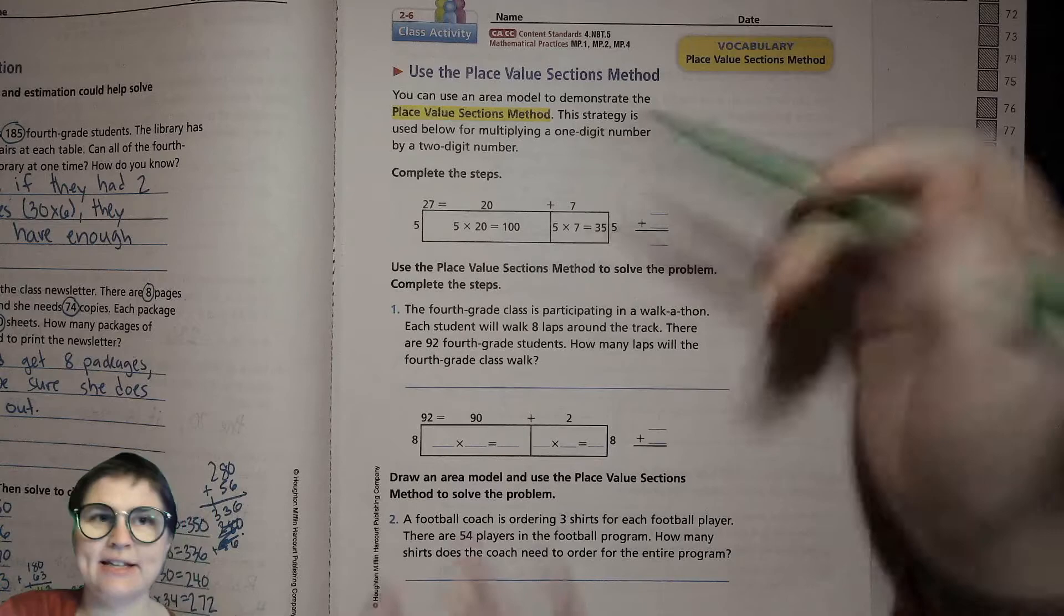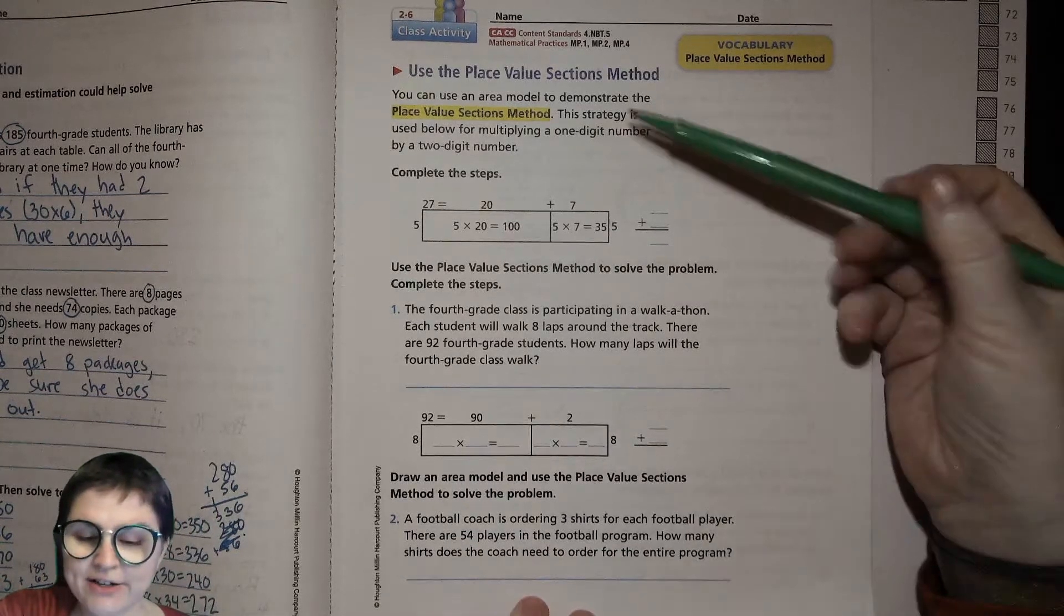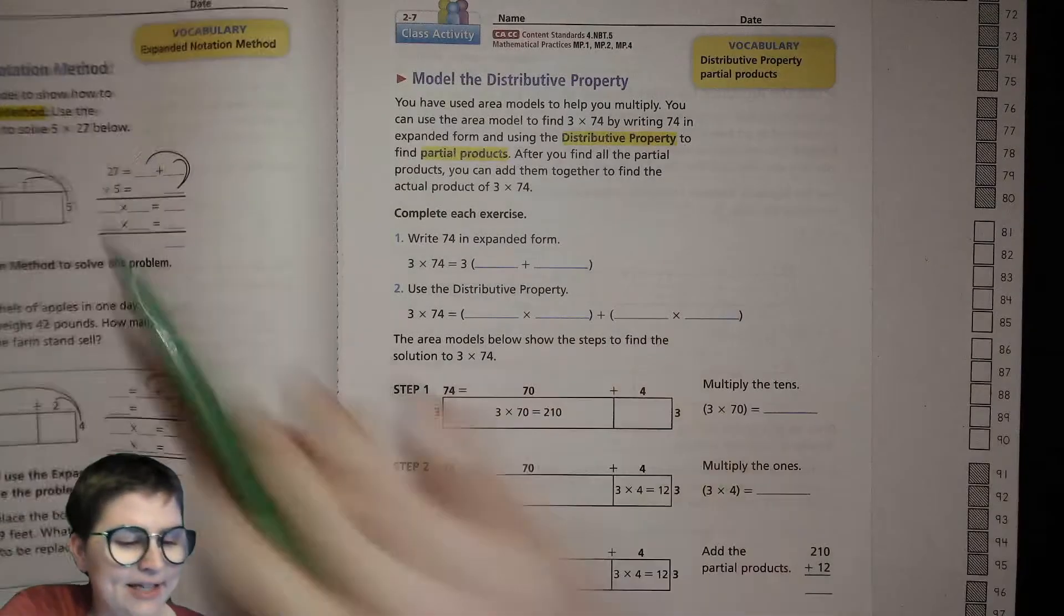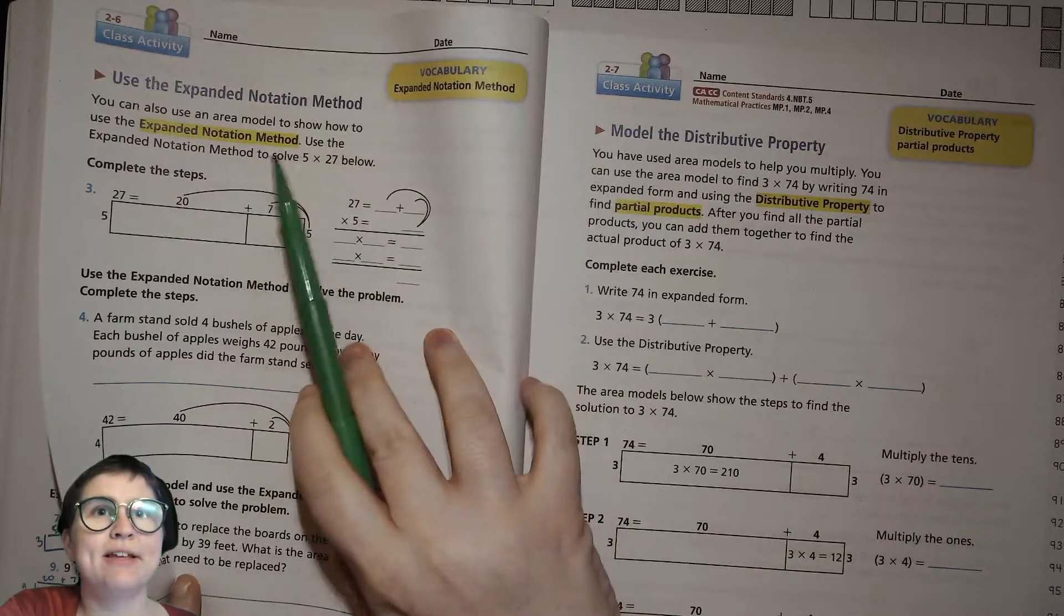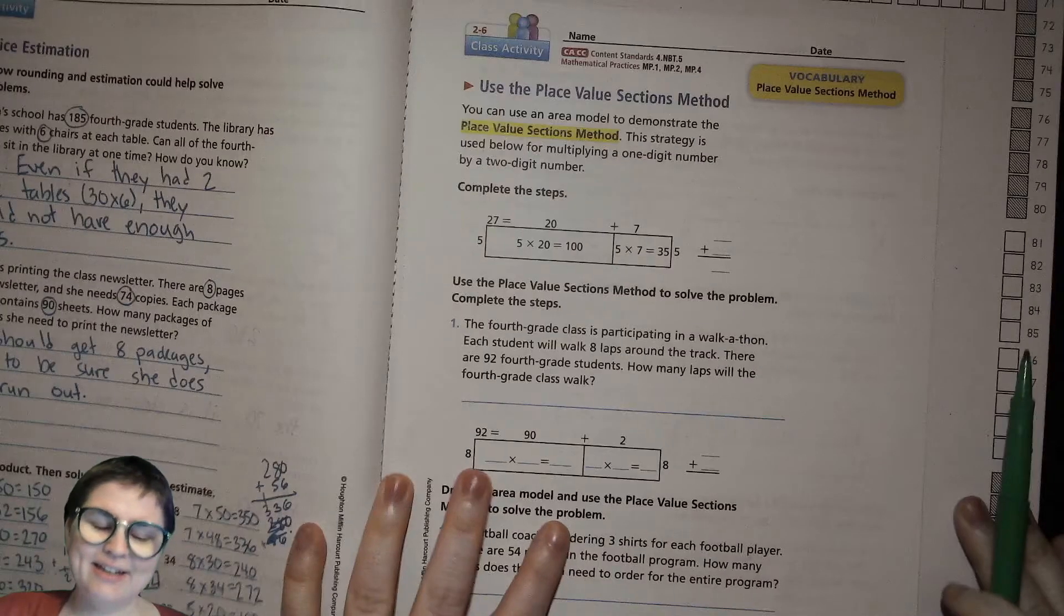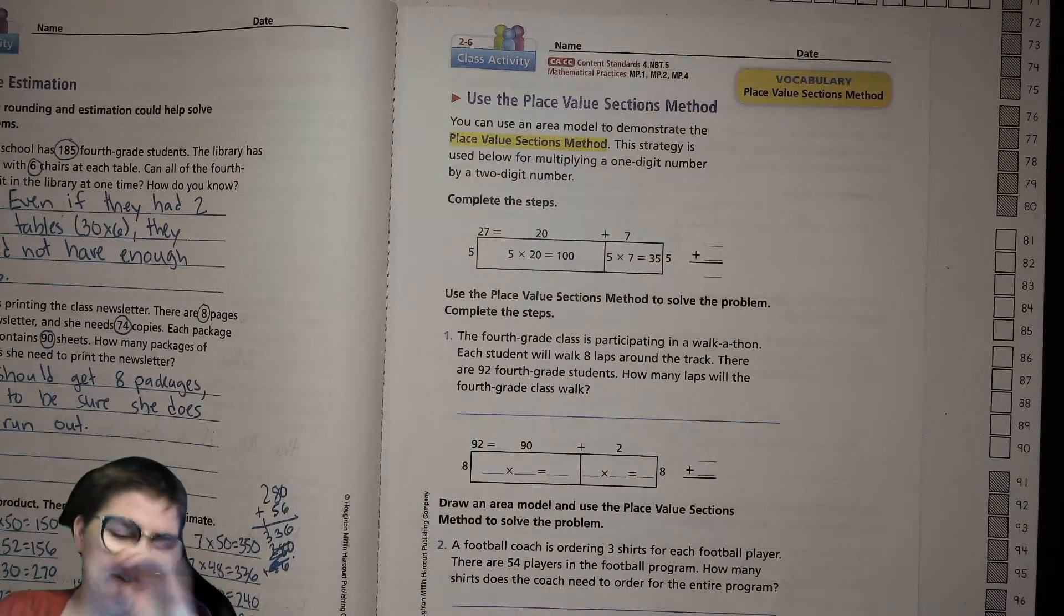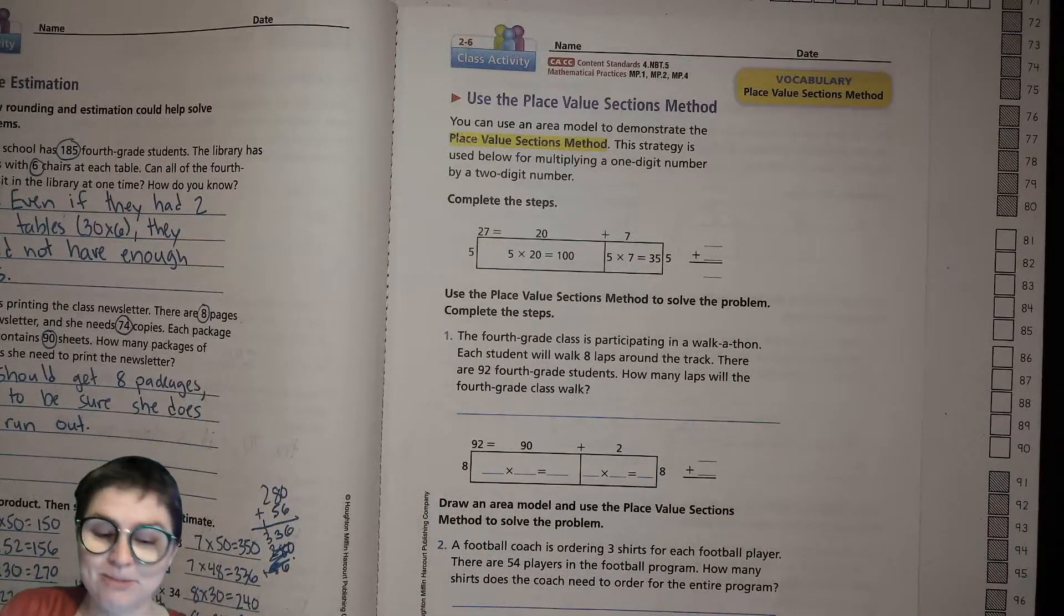In this lesson we're talking about place value sections method and expanded notation method. These both go along with that area model we were talking about and they're kind of similar, so let's just jump into it.